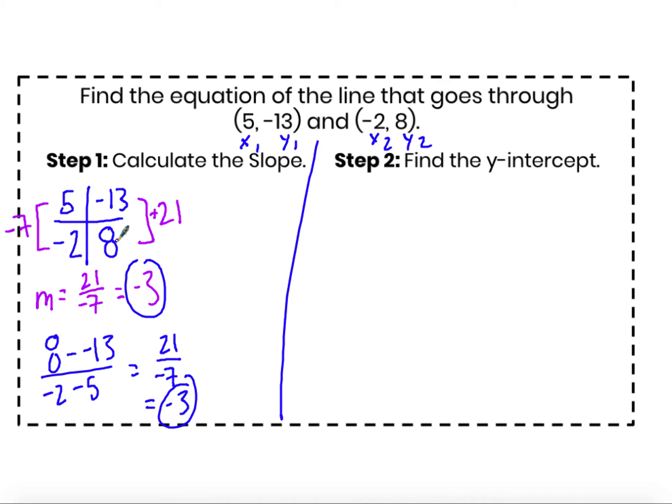So there's my first step, calculate the slope, it's negative 3. Now I need to algebraically solve for b, which is finding the y-intercept. So in my slope-intercept form, y equals mx plus b, I'm going to plug this negative 3 in for m, my rate of change. So I have y equals negative 3x plus b.